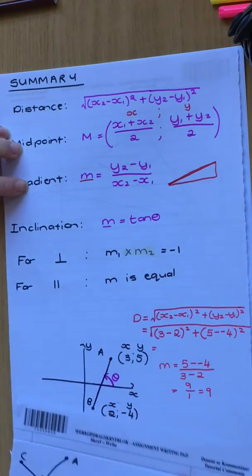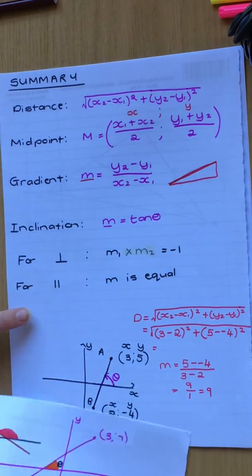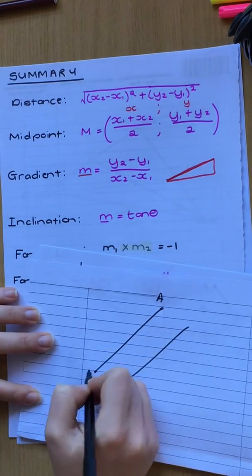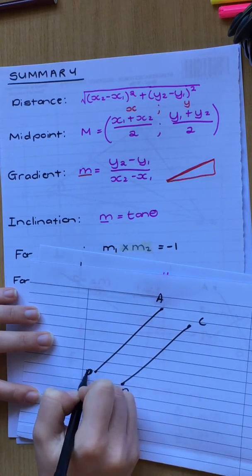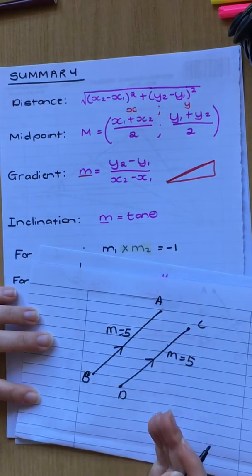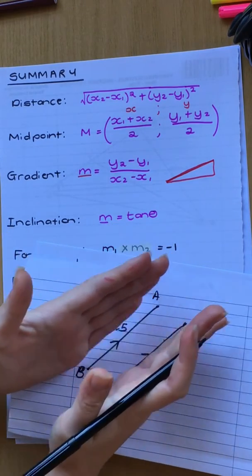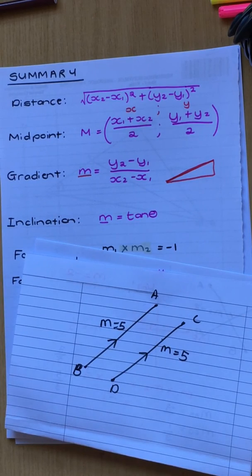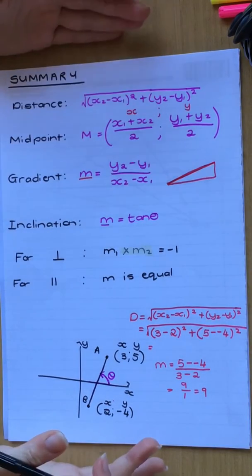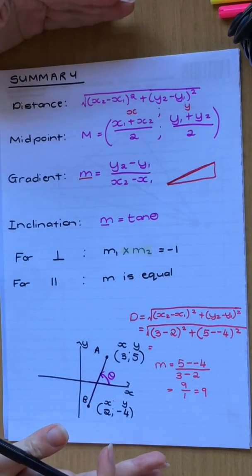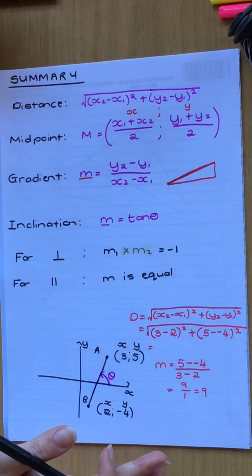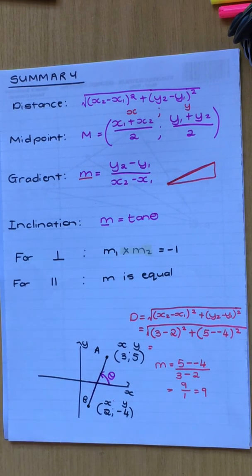If lines are parallel, the gradient is the same. So if line AB and line CD are parallel and AB's gradient is five, then CD's gradient is also five — the inclination and angle are the same, so the gradient must be the same. This is basically a summary page — I'll send a picture of this to the group. This is what you need to know for analytical geometry before you can answer questions. Make sure you copy this down and study the formulas. They will usually give you the formulas, but you need to know how to use them.